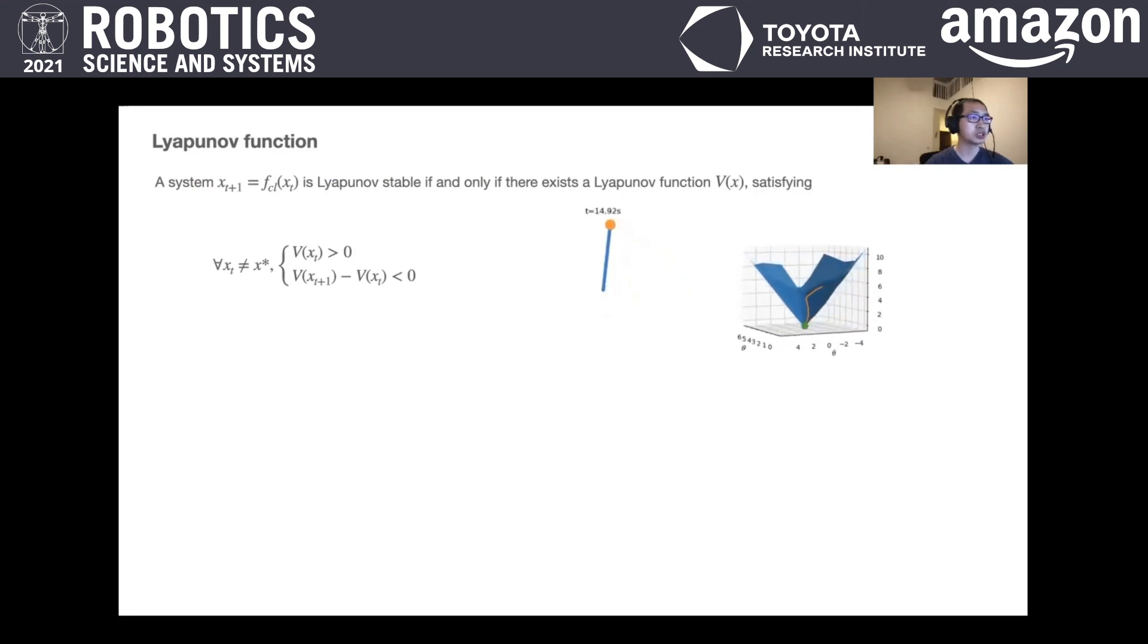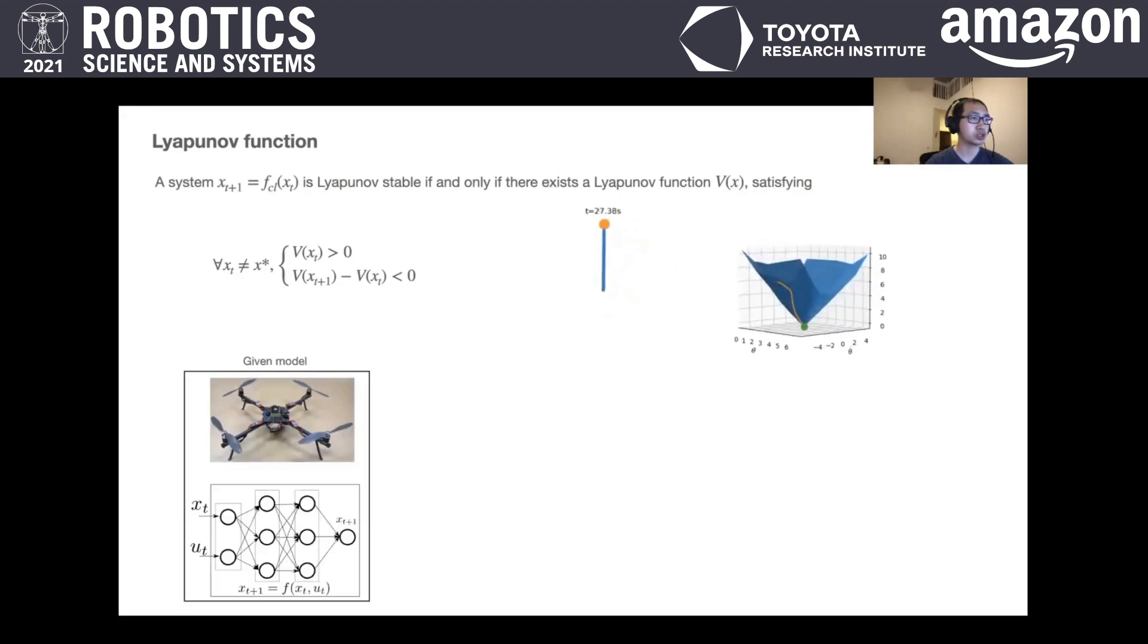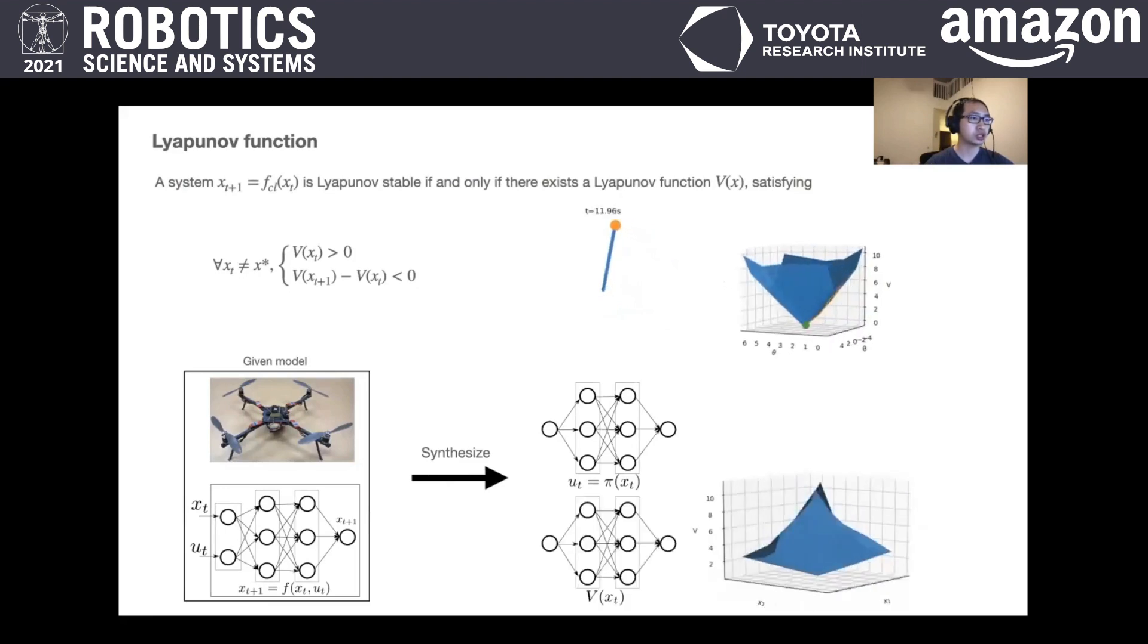Our problem setting is that we are given a robot model represented by a neural network, and we want to jointly synthesize both the neural network controller together with the neural network Lyapunov Function as a regional stability guarantee.